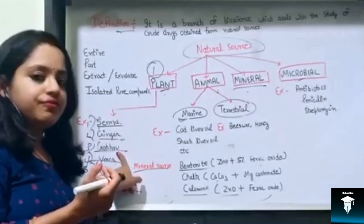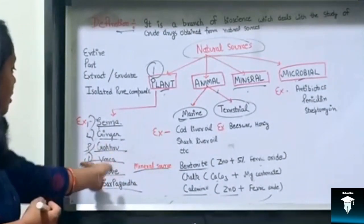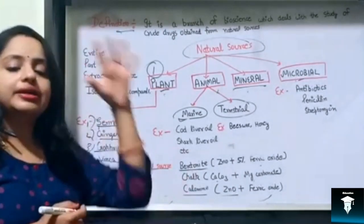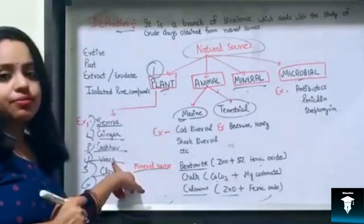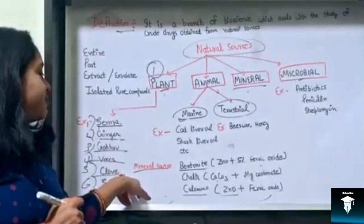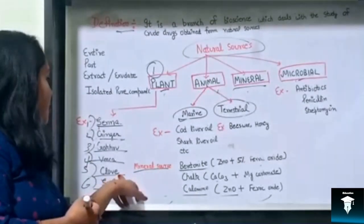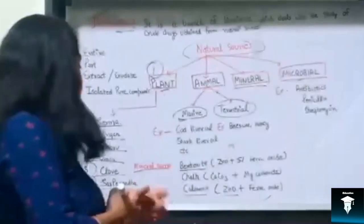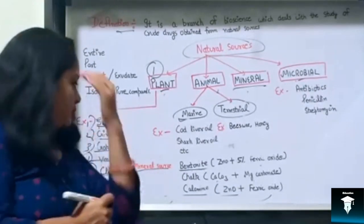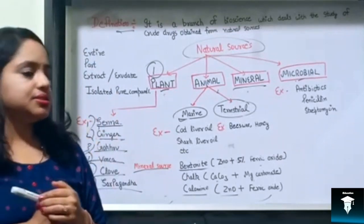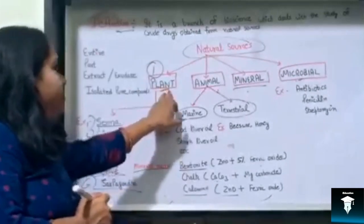Third drug is Gokhru — it is a dried fruit used in kidney stones. Fourth is Vinca — its whole aerial part is taken as a drug; it has anti-cancer properties. Fifth is Clove — it is a flower bud used as a drug, obtained from the plant Eugenia. Last one is Rauwolfia — it is a root of the plant Rauwolfia serpentina; it has antihypertensive properties. These are some examples; there are many more drugs obtained from plants.